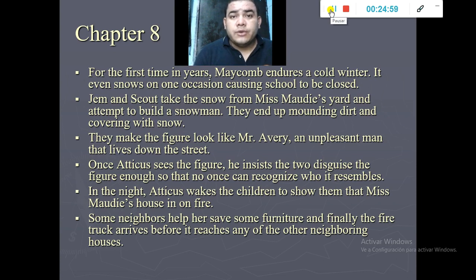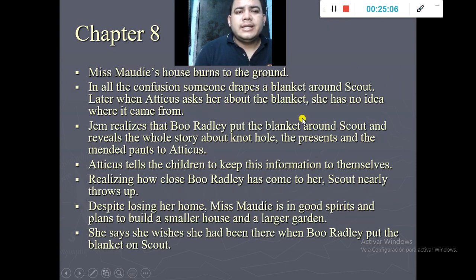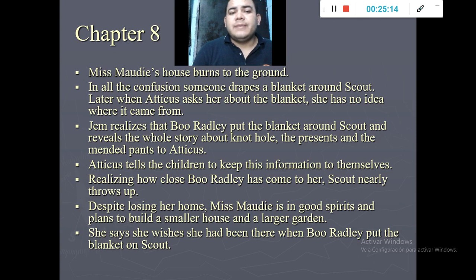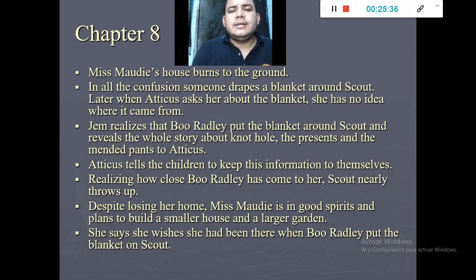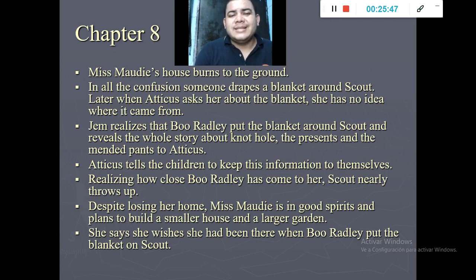After the fire, everybody is confused and scared. Something important happens: someone puts a blanket on Scout's shoulders and she has no idea who did it. Jem realizes that Boo Radley was the one who put the blanket on Scout because it was very cold. Atticus also realizes this, and they all agree not to tell anyone that Boo Radley put the blanket on Scout's shoulders.